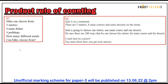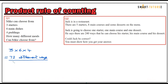Question number one: Mike can choose from three starters, six main dishes, and four puddings. How many different meals can Mike choose from? There are three ways of choosing the starters, multiplied by six main dishes, multiplied by four types of pudding. Three times four is twelve, times six is 72 different ways.